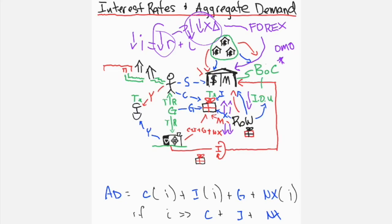Together, increases in consumption, investment, and net export expenditure lead to an increase in aggregate demand caused by a decrease in interest rates. And vice versa: aggregate demand will decrease from increased interest rates through decreased consumption, decreased investment, and decreased net export expenditure.